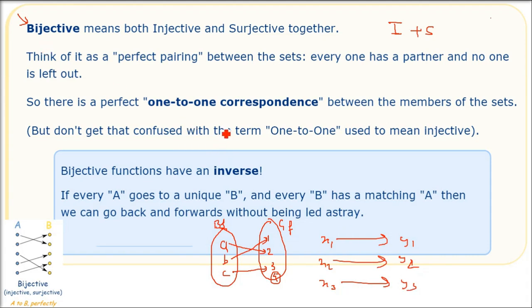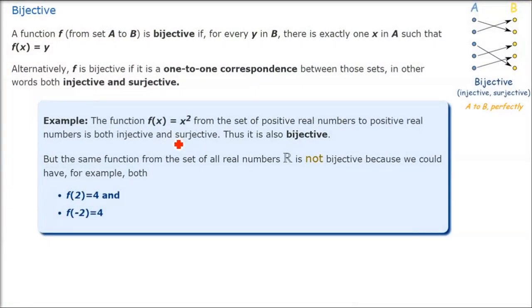For every x we have y, and for every y we have x, so bijective functions have an inverse. The range and codomain are the same here, which is why inverse is possible.